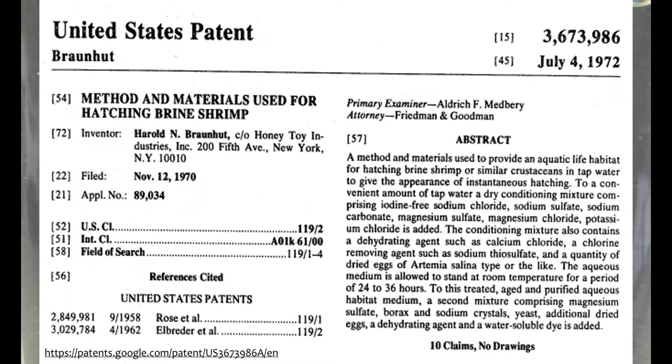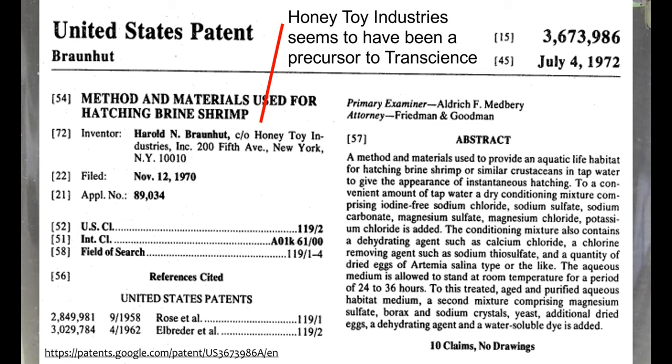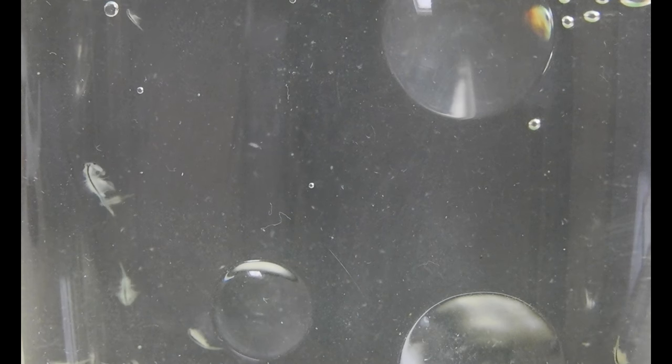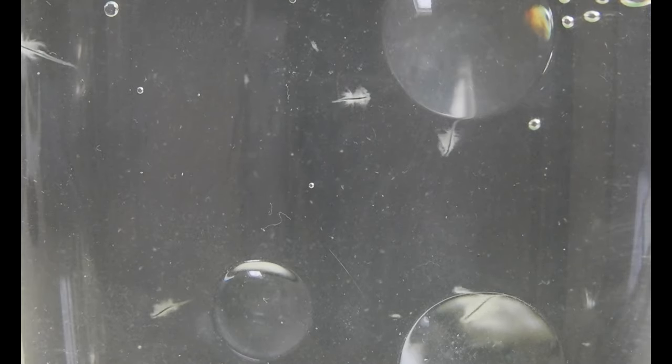A patent pertaining to the Sea Monkey formula was filed by van Braunhut on November 12th in 1970. Could this have been the first refinement? Well, the recipe within calls for a quantity of dried eggs of Artemia Salina type or the like. The patent makes no mention of Artemia Nyos or any hybridization attempts. I found nothing matching this second refinement so far.